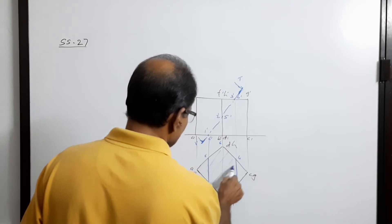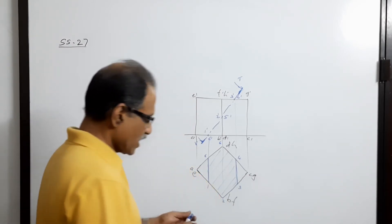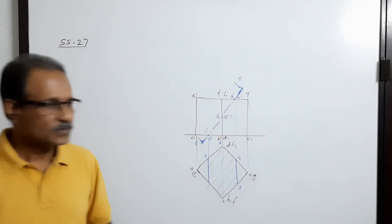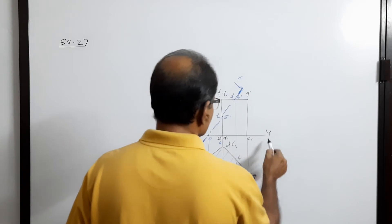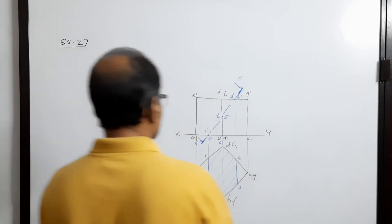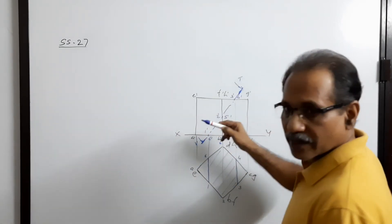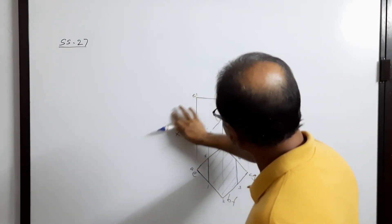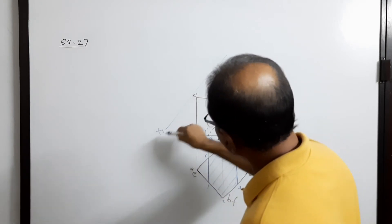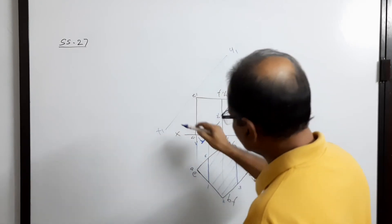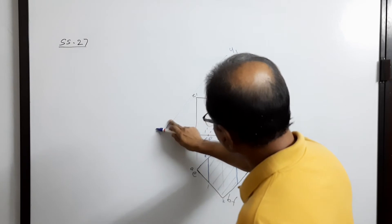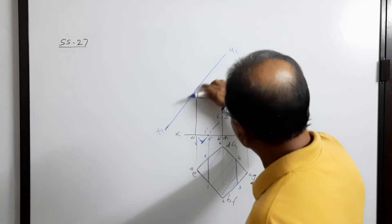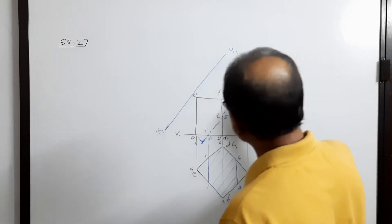Hatch the section at 45 degrees to the XY line. Now draw an X1Y1 line parallel to the cutting plane. Draw projectors through these points perpendicular to X1Y1.